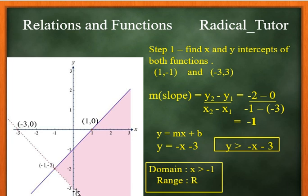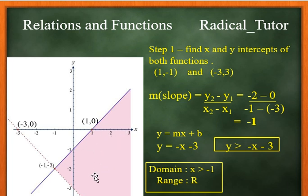For the shaded region of the second line, the shaded area is above the line, so the inequality is y greater than negative x minus 3. The pointed line has an x-value of minus 2, and the point is at minus 1.